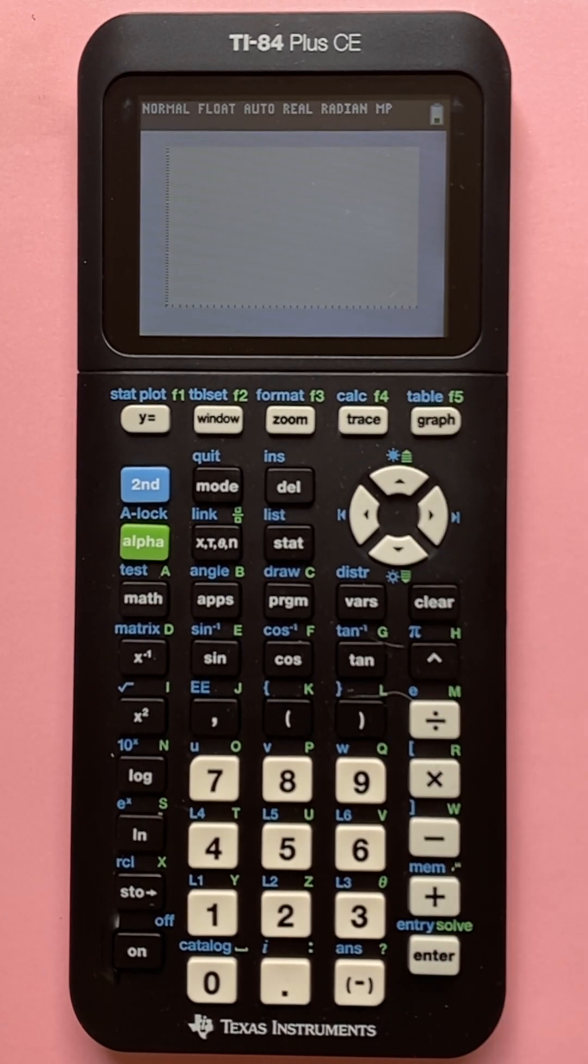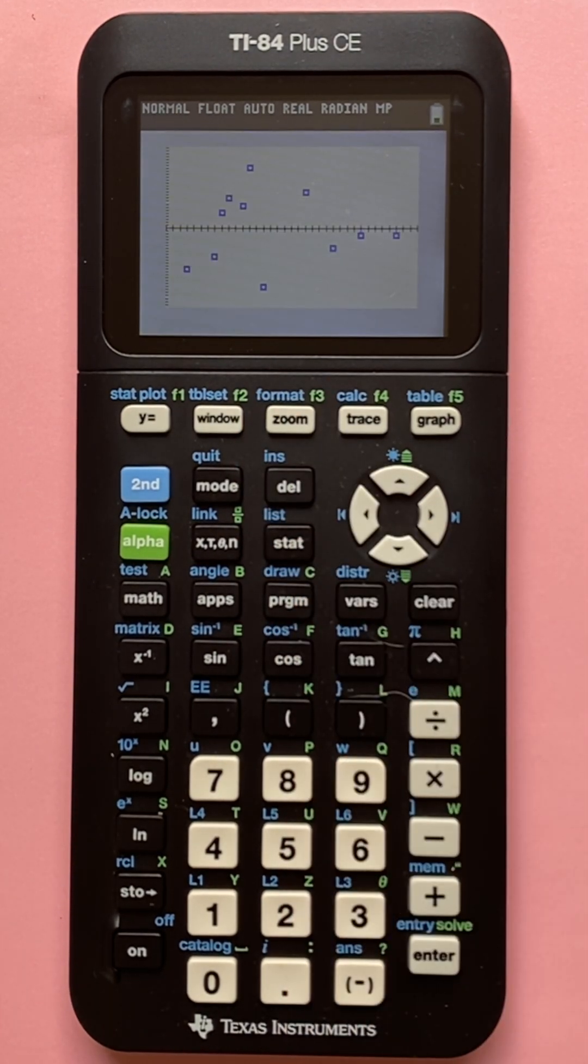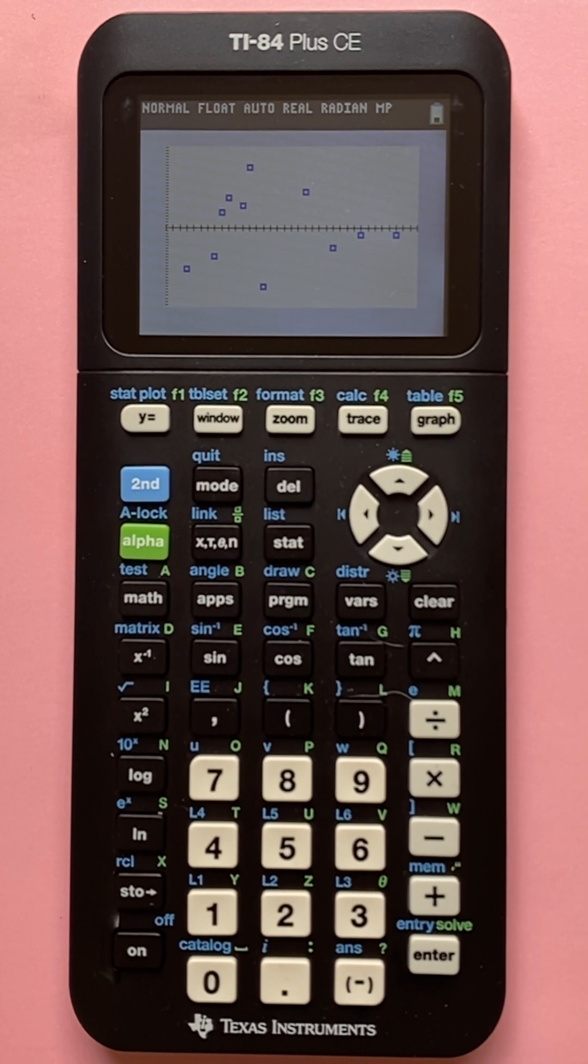Now when I graph this, my scale has been changed. But if I go back to zoom and stat, now I can see here are a plot of all my residuals against my x value. Since there is no discernible pattern, a linear regression is appropriate.